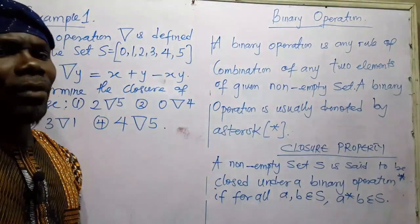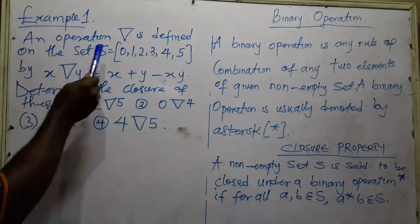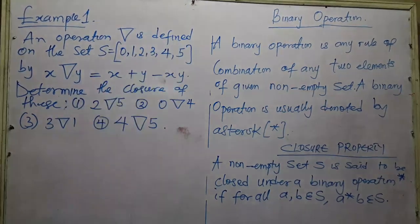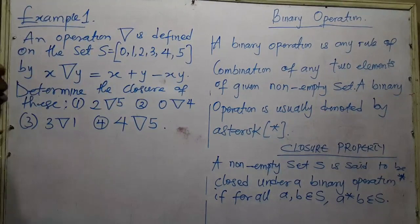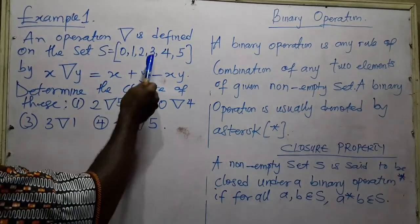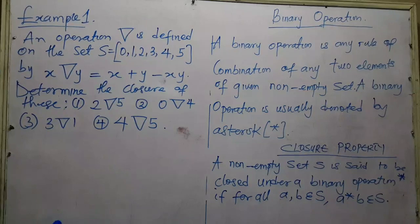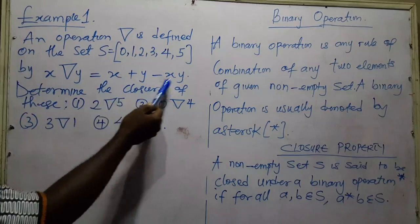Now let's have a meaningful example on the closed property. An operation is defined on the set X, where X contains the elements 0, 1, 2, 3, 4, 5. The operation given is: X operation Y equals X plus Y minus XY.